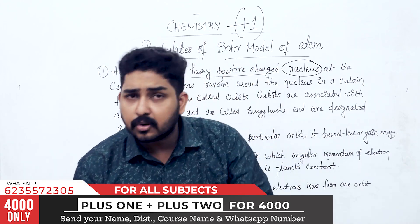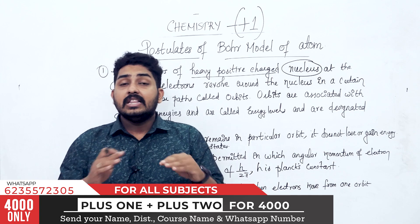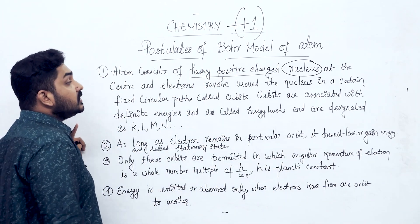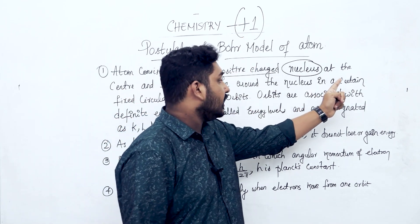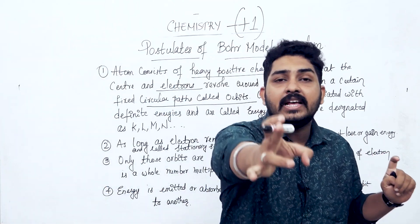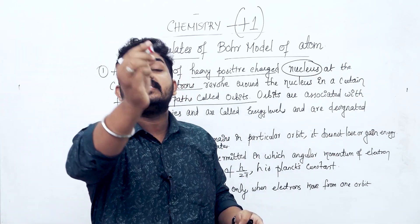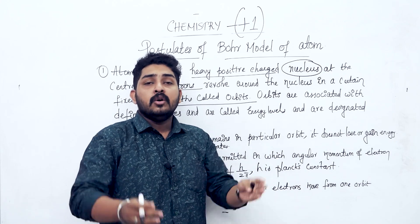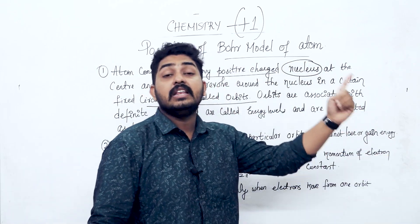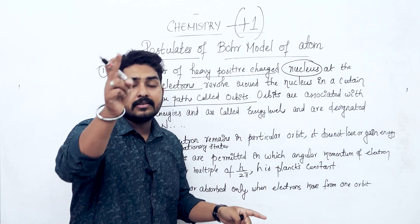Fixed circular paths are called orbits. There is a positively charged nucleus in the middle, and electrons revolve around the nucleus in a fixed circular path. That particular path is called an orbit.